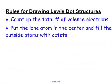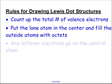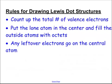The second thing we're going to do is put the lone atom in the center — that's the one that's all by itself. If you don't know which one's the lone atom, just put one of them in the center, then fill the outside atoms with octets — eight electrons. If it's hydrogen, you only fill it with a single bond, and that is its octet. Then any leftover electrons go on the central atom.